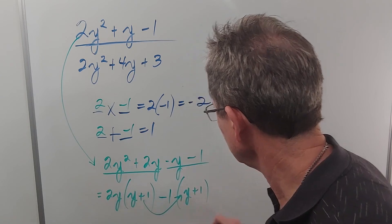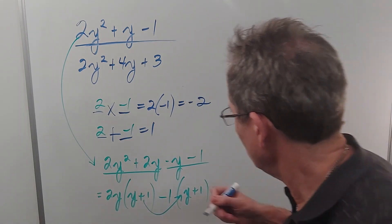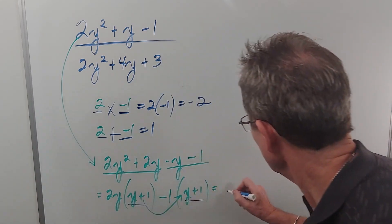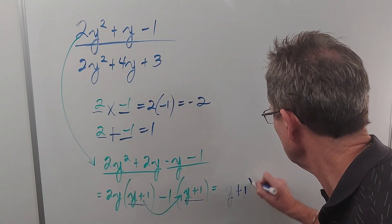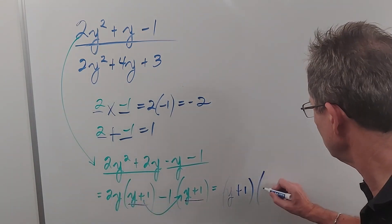Now I can factor out the y + 1's. Bring that to the front. Whatever's left over goes in the second bracket, so 2y - 1.